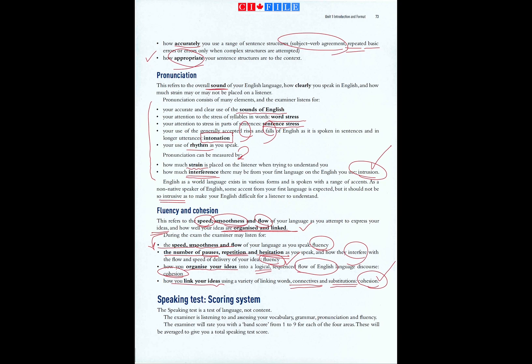Speaking test scoring system: The speaking test is a test of language, not content. The examiner is listening to and assessing your vocabulary, grammar, pronunciation, and fluency. The examiner will rate you with a band score from one to nine for each of the four areas, and these will be averaged to give you a total speaking test score.